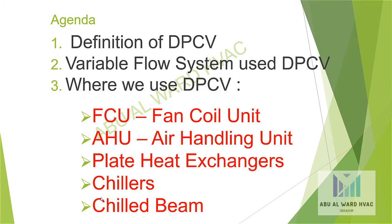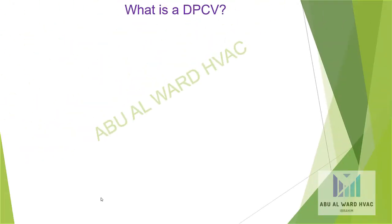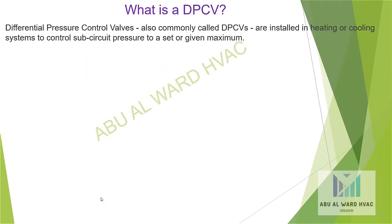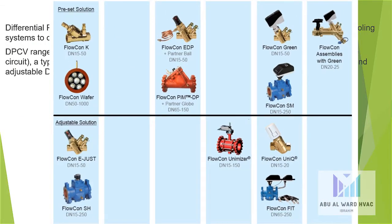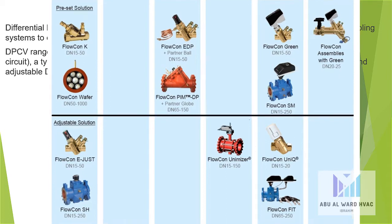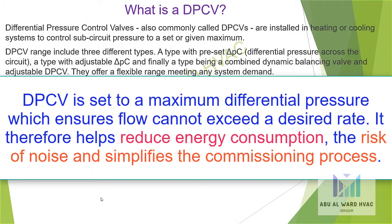What is a DPCV? Differential pressure control valves, commonly called DPCVs, are installed in heating or cooling systems to control sub-circuit pressure to a set or given maximum. DPCVs include three different types: a type with preset Delta PC, a type with adjustable Delta PC, and a type being a combined dynamic balancing valve and adjustable DPCV. They offer a flexible range meeting any system demand.